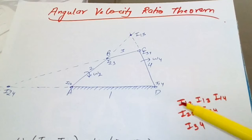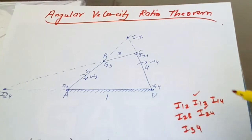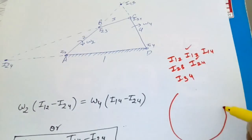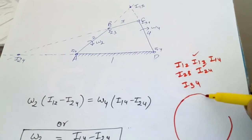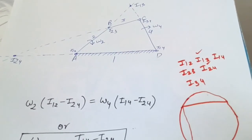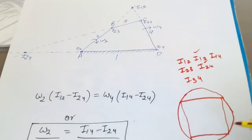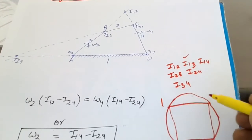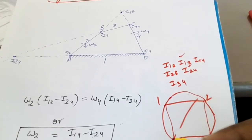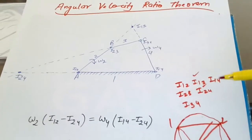We know 4 I-centers from the pin joints, but i13 and i24 are unknown. To find them, you construct a square — for 4 links use a square; for 6 links use a hexagon — and label the corners 1, 2, 3, 4. The diagonals of the square represent the unknown I-centers i13 and i24.